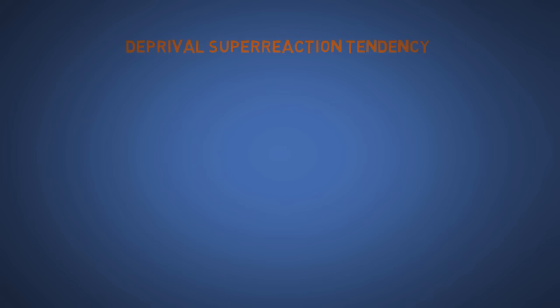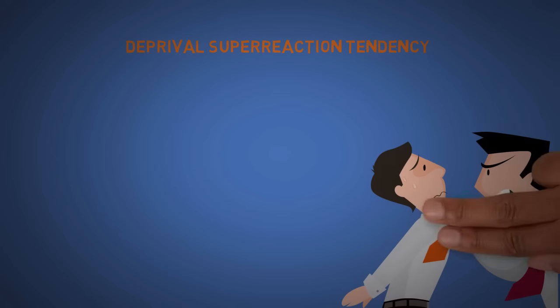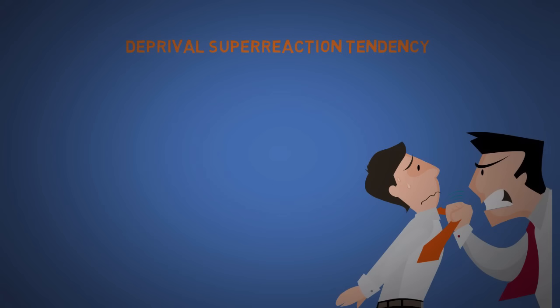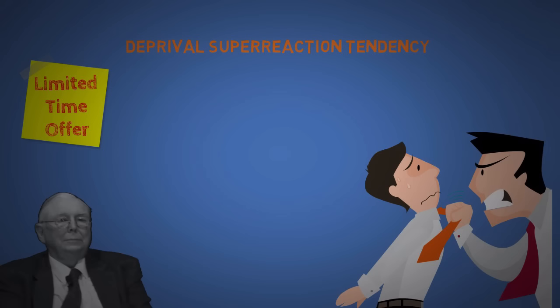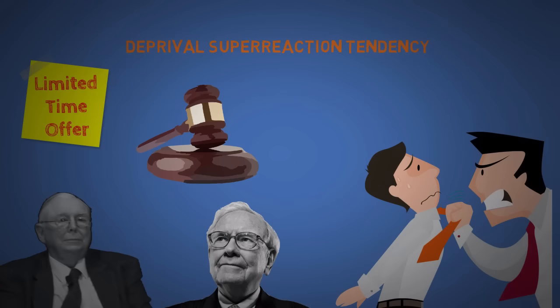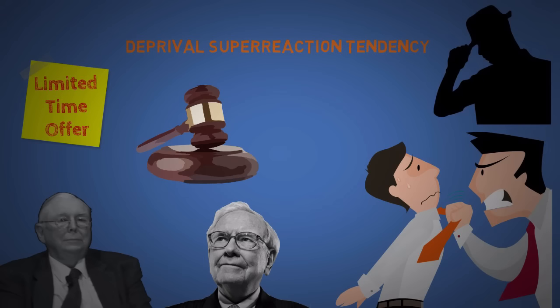The fourteenth is a deprival super reaction tendency. People tend to act irrational with intensity even to small losses sometimes. This is why limited time offers are powerful. Even Charlie Munger and Warren Buffet, two of the most successful people in this world, both hate being in auctions because they always feel like getting manipulated. Going once, going twice, sold to the man wearing the fedora hat.